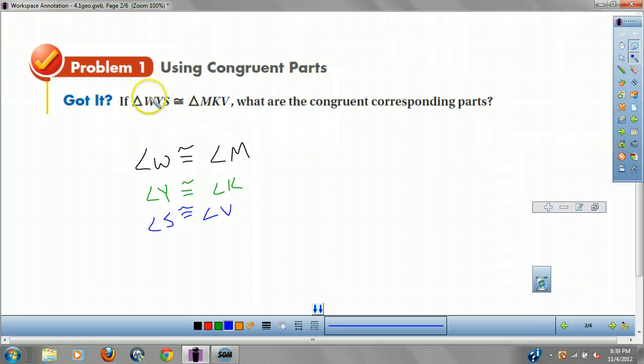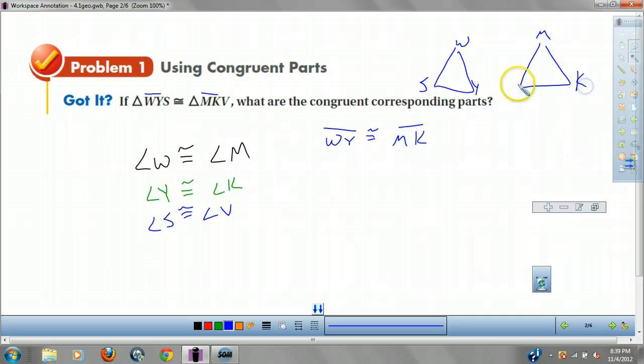Now I'm going to show you the other thing we can do. So I can also go, well, if I draw this out, WY will match up with MK. So I can say WY, my segment, is congruent to MK. Again, if we draw this, WYS, this would be MKV. So you can check it if you want. And then I can go, well, YS is going to match up with KV. And there's one more. This one's trickier. What about WS? Well, that matches up with MV. Because triangles are going to have six sets of corresponding parts.